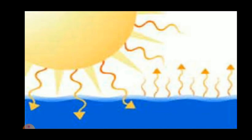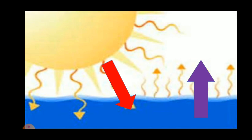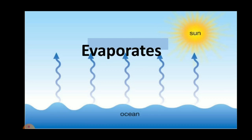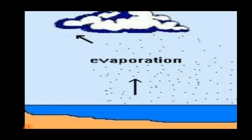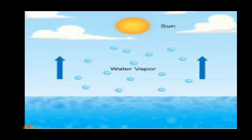The water cycle involves the following steps. Step 1: The sun heats up water from ponds, rivers, seas and oceans. The water evaporates to form water vapor. This process of water changing to vapor is called evaporation. The water vapor, being lighter, rises high in the sky.